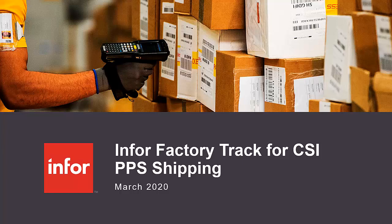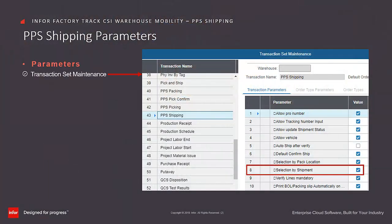Infor FactoryTrack for CSI, PPS Shipping. FactoryTrack has several PPS shipping parameters to control the validations, displayed fields, and processing options that are permitted as part of the PPS shipping process. These are defined on the transaction set parameters form for the PPS shipping transaction.